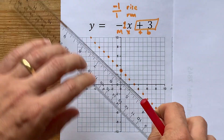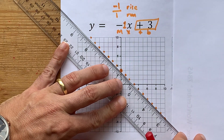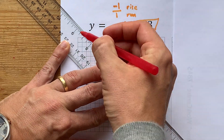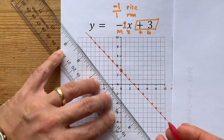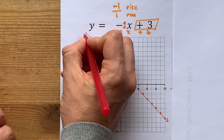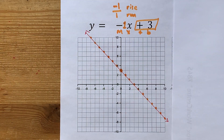Remember, the last step for graphing a line is to use a ruler to connect all the points. Don't forget to put arrows on both ends — that's what makes it a line and not a line segment. There you go, we're done.